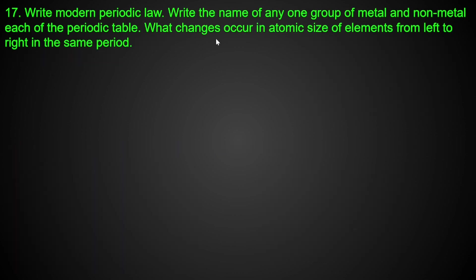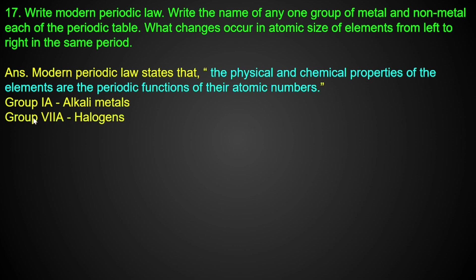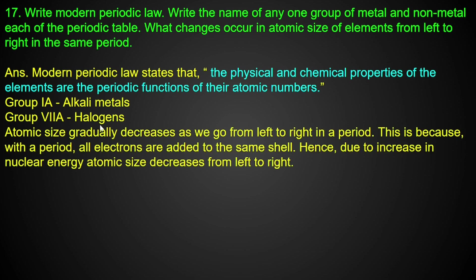Next, write the Modern Periodic Law. You can see it in the standard textbook form. The next question asks to write the name of any one group of metals: alkali metals and alkaline earth metals. Moving along the halogens, atomic size gradually decreases as we go from left to right across the period.